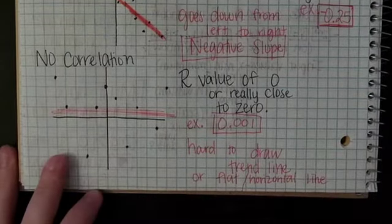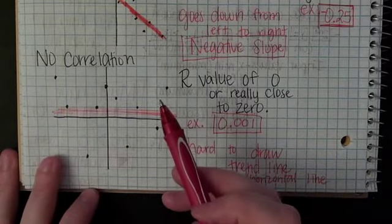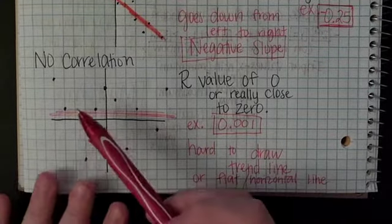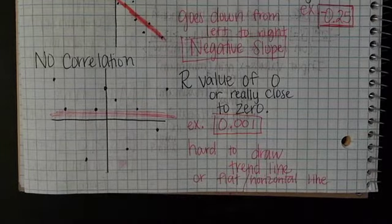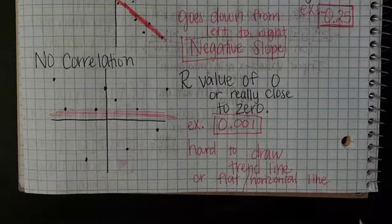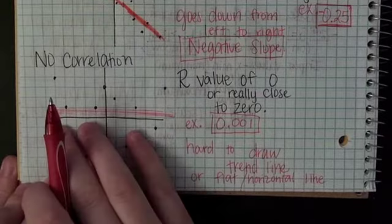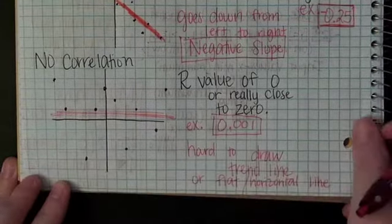You can say hard to draw a trend line or a flat horizontal line. If there's no correlation, that would mean like if I was talking about pizza, I don't think it really matters. If the temperature is higher or lower, people just want to get pizza. For me it's always when I'm lazy I want to go get pizza. No correlation, it's not as the temperature goes up the number of people coming in goes up.